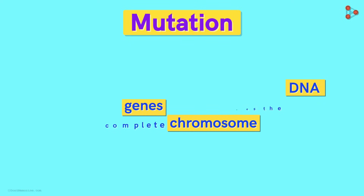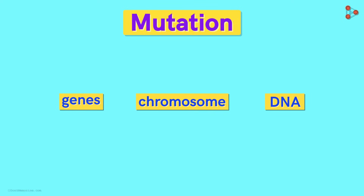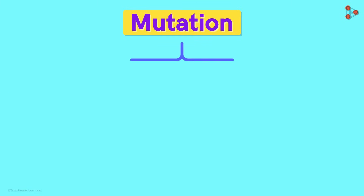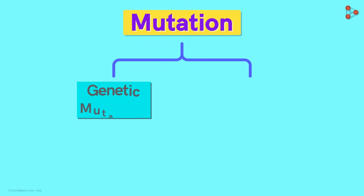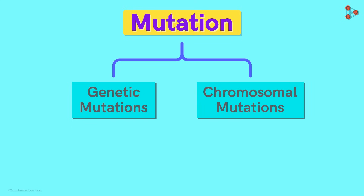So mutations are spontaneous changes that affect the DNA, the genes, or sometimes the complete chromosomes. Since these are the areas that get altered, mutations are categorized on the basis of them. The two major types of mutation are genetic mutation and chromosomal mutation.